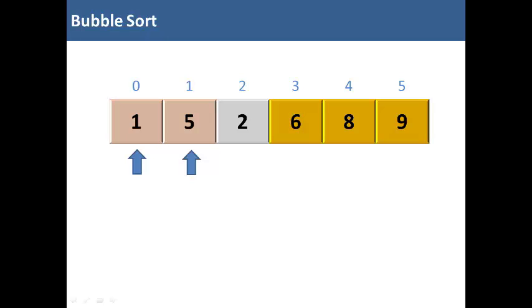Next iteration, we'll compare one to five. One is not greater than five. We'll compare five to two. Five is greater than two, so we're going to swap these two items. That completes our fourth iteration, and the five is now considered sorted.